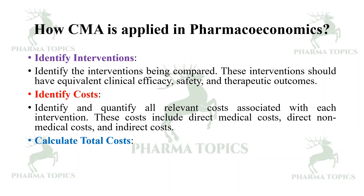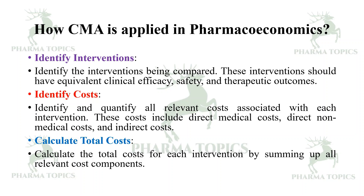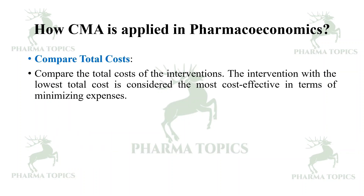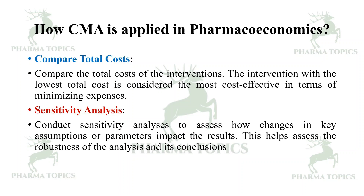Calculate the total cost for each intervention by summing up all the relevant cost components. Then compare the total costs — the intervention with the lowest total cost is considered the most cost-effective in terms of minimizing expenses. Conduct sensitivity analysis to assess how changes in key assumptions or parameters impact the results, helping assess the robustness of the analysis and its conclusions.